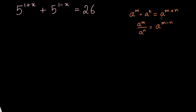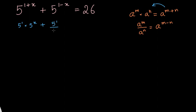In this question, we will be making use of these rules the other way. So let us start solving. We have the term 5 to the power 1 plus x. Using the first law in reverse, we can write 5 to the power 1 plus x as 5 to the power 1 times 5 to the power x. Similarly, using the second law, we can write 5 to the power 1 minus x as 5 to the power 1 divided by 5 to the power x. This equals 26.